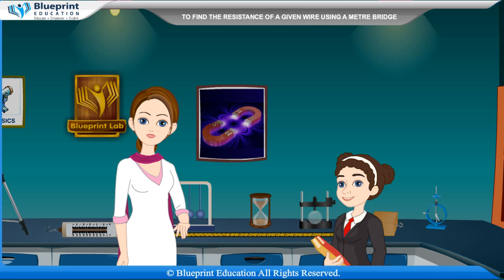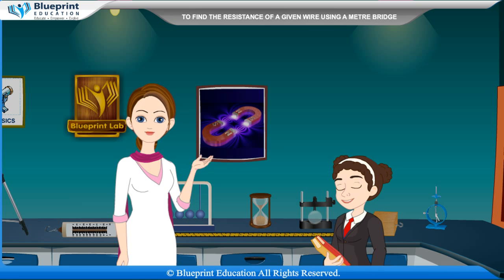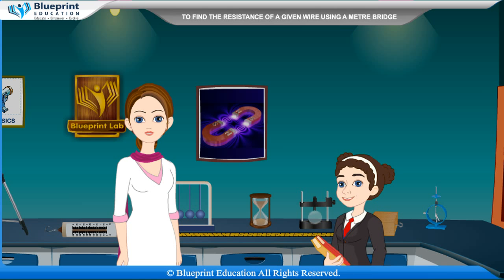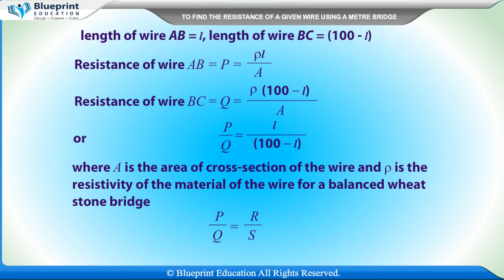If the resistances applied by the resistance boxes produce no deflection in the galvanometer at point B on wire AC, then the length of wire AB equals L, length of wire BC equals 100 minus L. Resistance of wire AB is P = ρL/A, resistance of wire BC is Q = ρ(100−L)/A, so P/Q = L/(100−L), where A is the area of cross-section and ρ is the resistivity of the material. For a balanced Wheatstone bridge, P/Q = R/S.